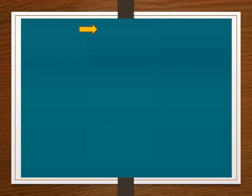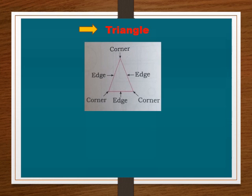What do you see here in the picture? Chitrat aaplala kaay disat ahi. We see a shape of triangle. Chitrat aaplala trikon disat ahi.